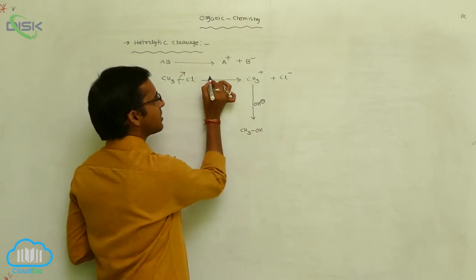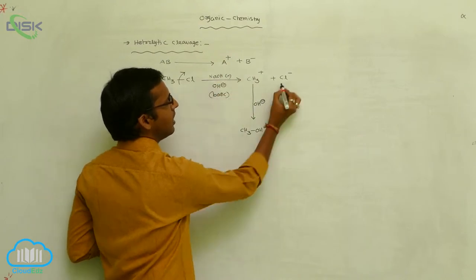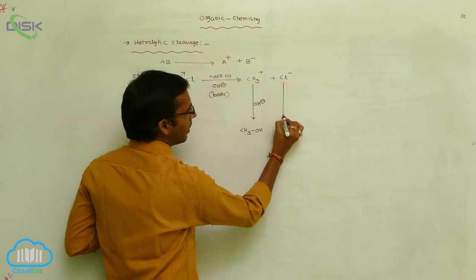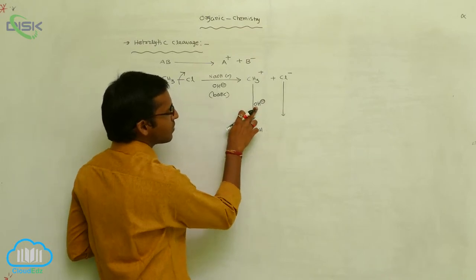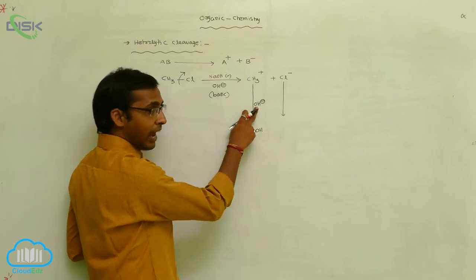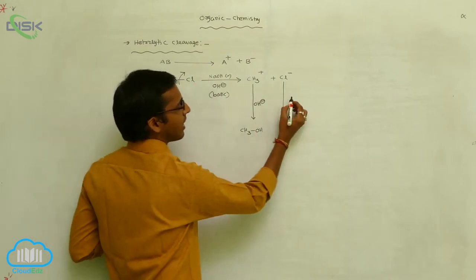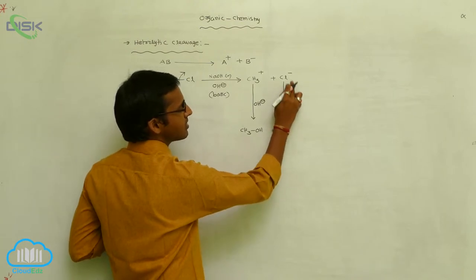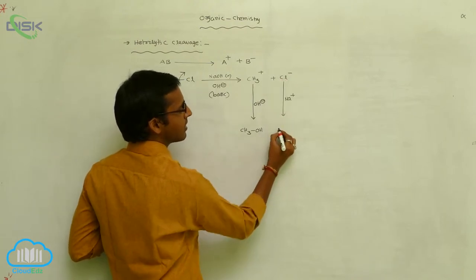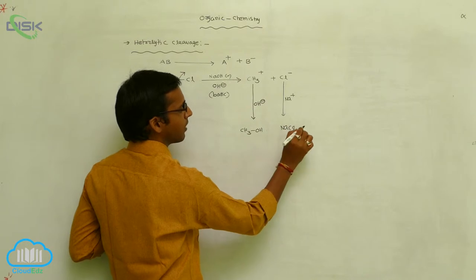Or if you consider NaOH, sodium hydroxide, that is also basic. OH⁻ is your anion, and sodium is the cation. So cation carries positive charge — the plus interacts with minus — and its name is sodium chloride.